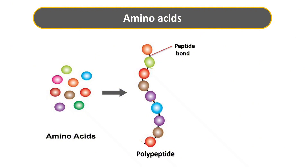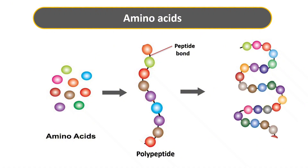This polypeptide chain can be 50, 100 or even 300 amino acids long. When these long polypeptide chains fold into 3D structures, they become functional proteins and can now perform vital roles as enzymes, hormones, transporters, etc. Just remember: amino acids link into peptides, peptides grow into polypeptides, and polypeptides fold into functional proteins.